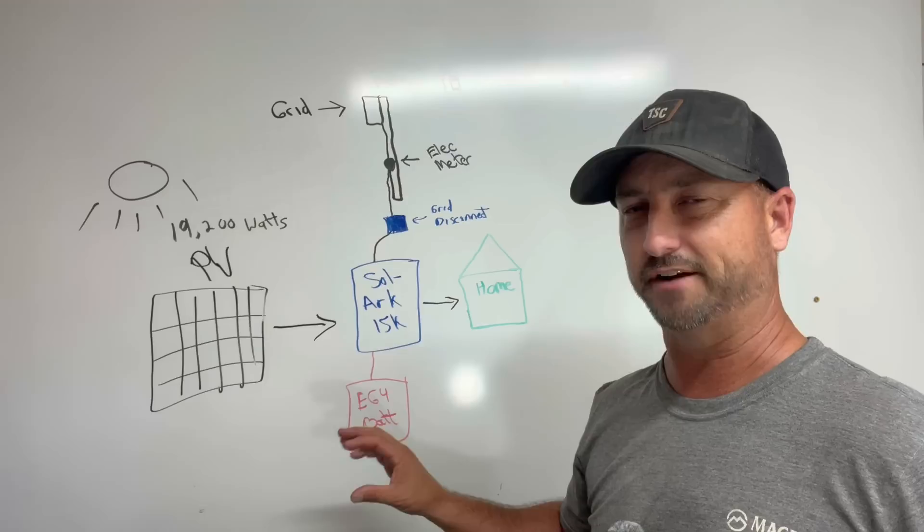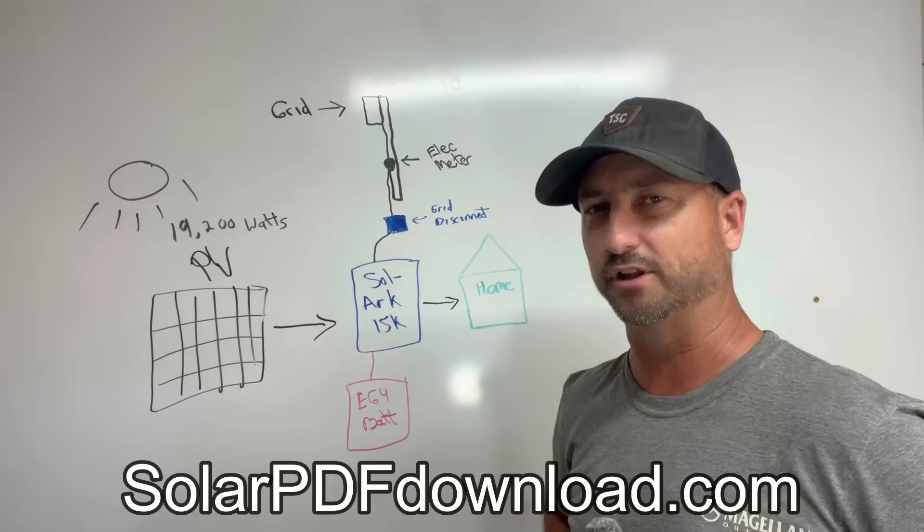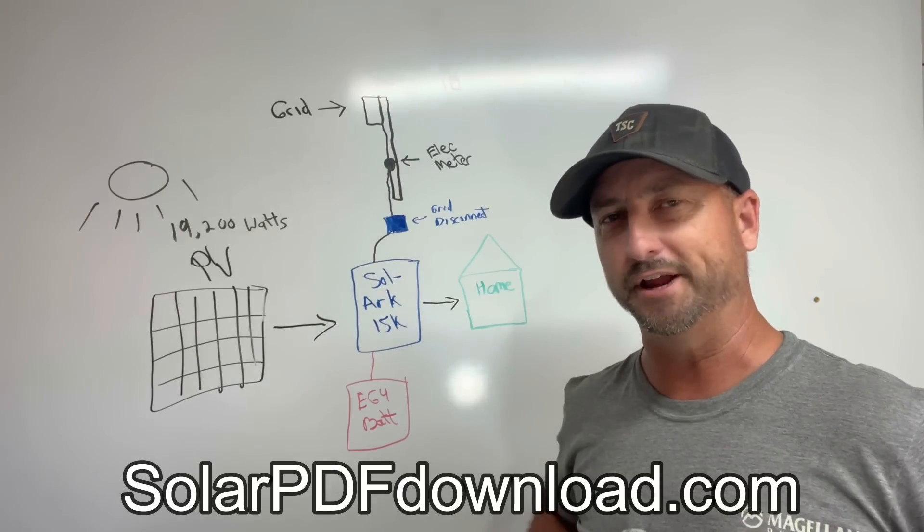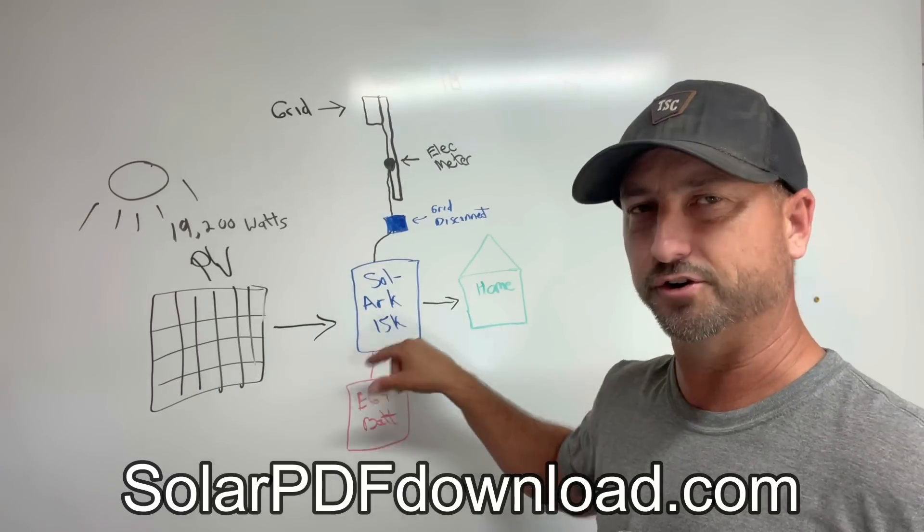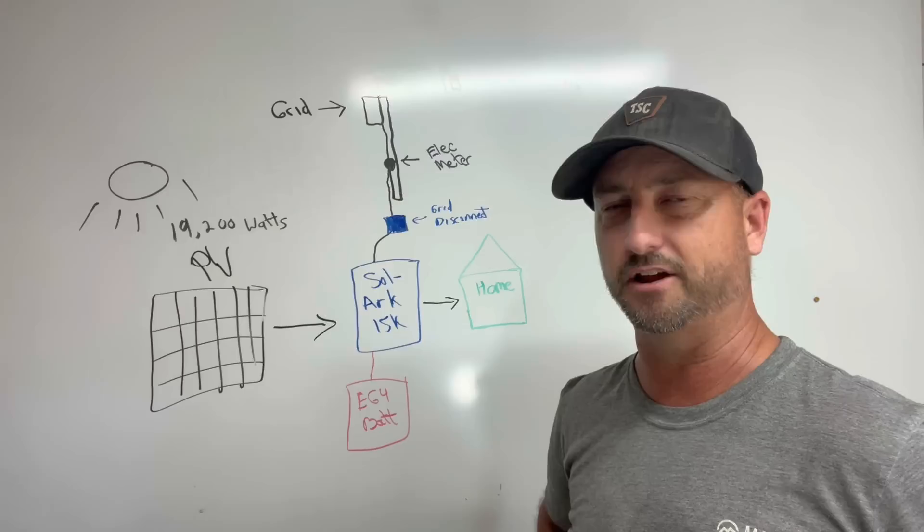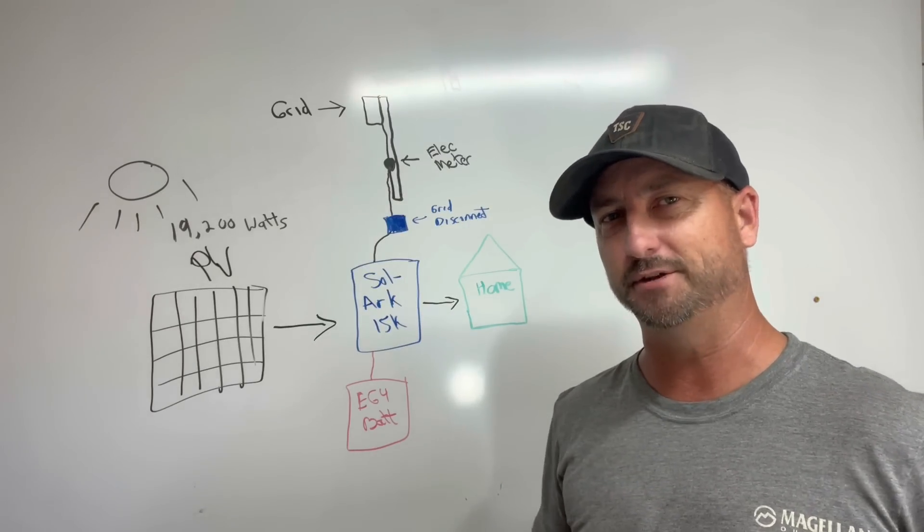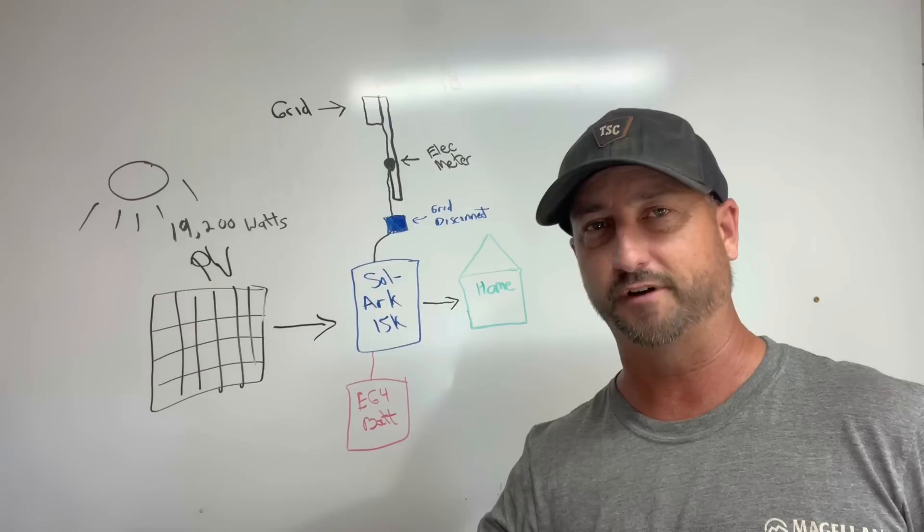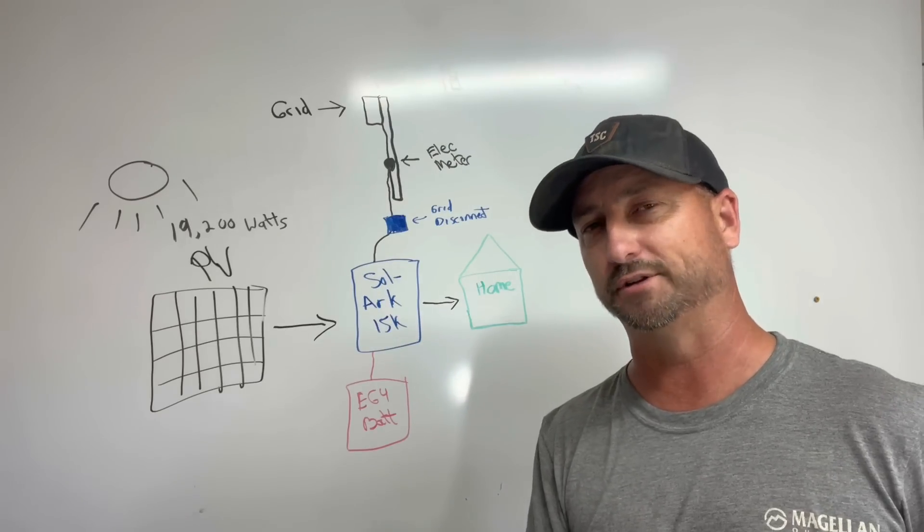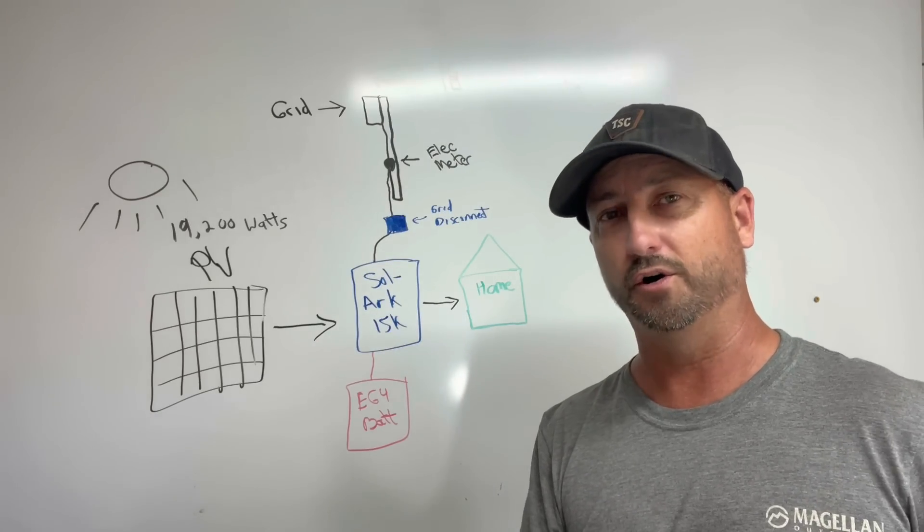Now the brains of the operation is the inverter, my Solark 15k all-in-one hybrid inverter. It's called hybrid because it can be used both on grid and sell back to your grid provider if you wanted to, or you can use it completely off grid, or you can do a combination of the two which is what I do.